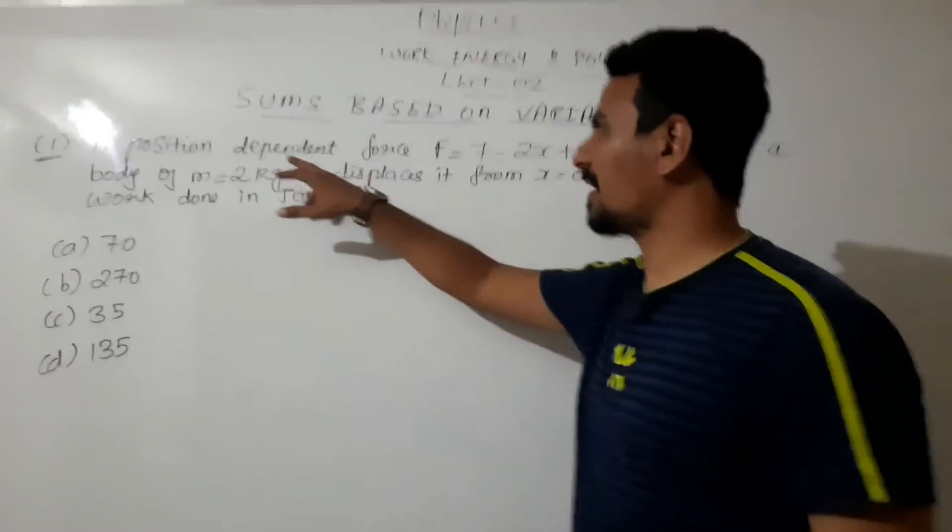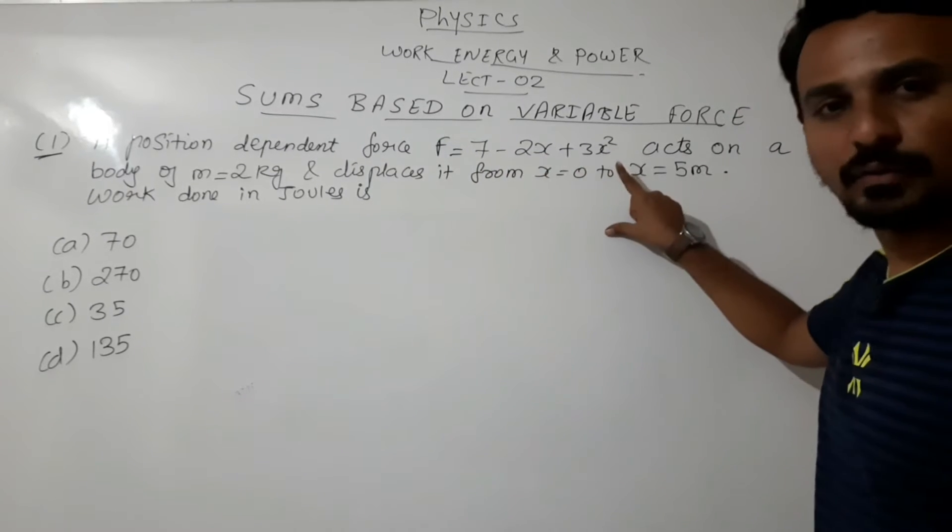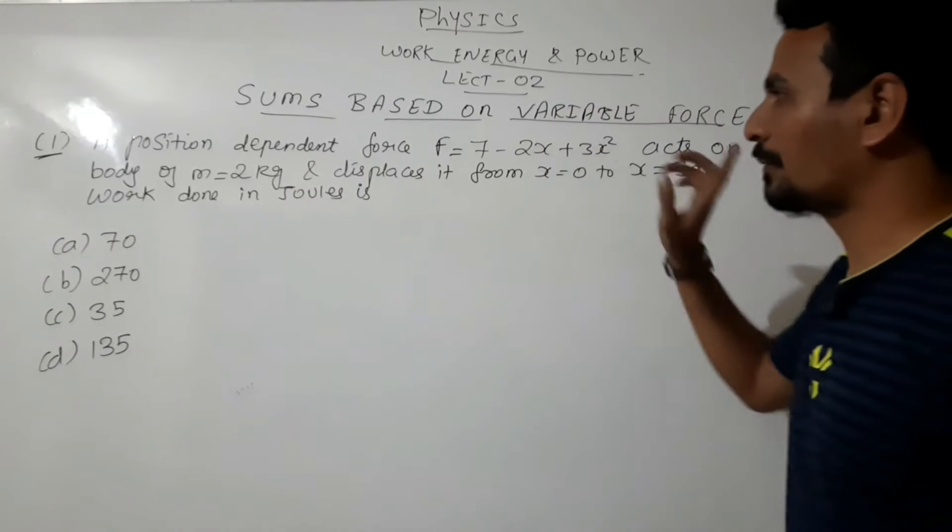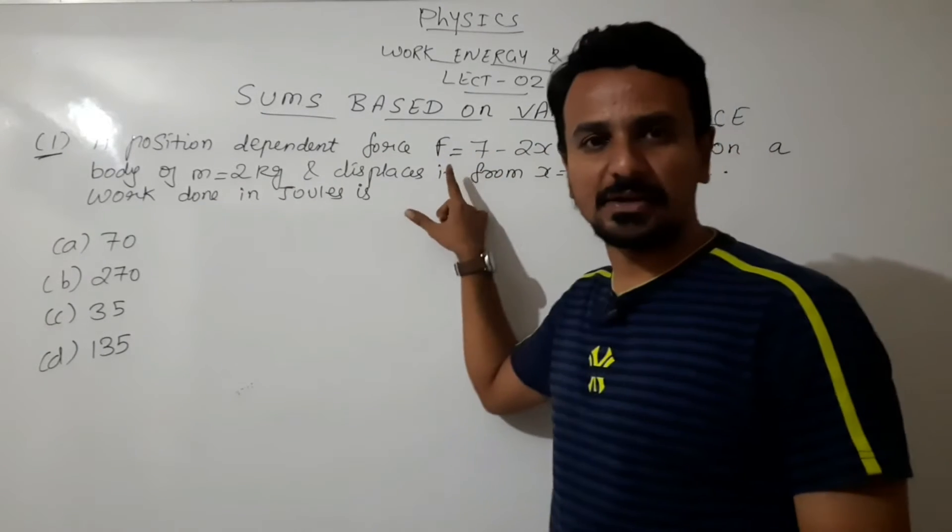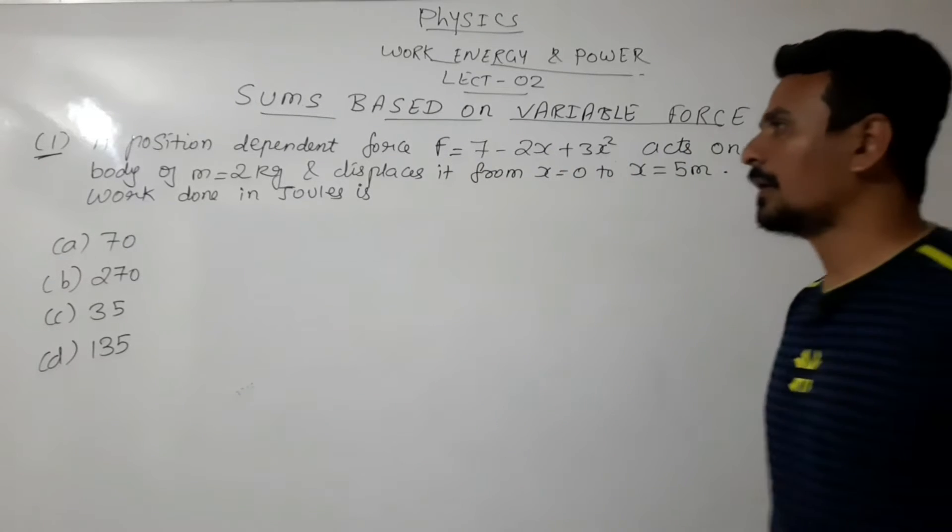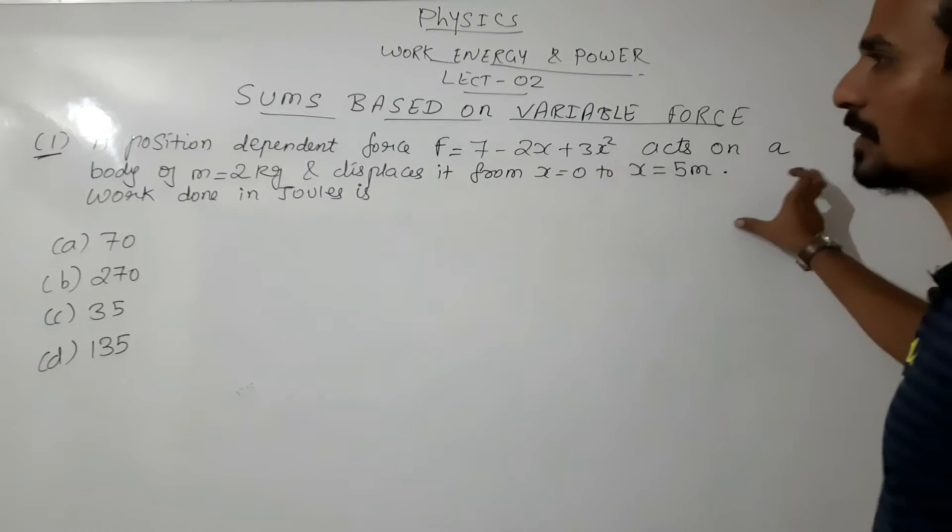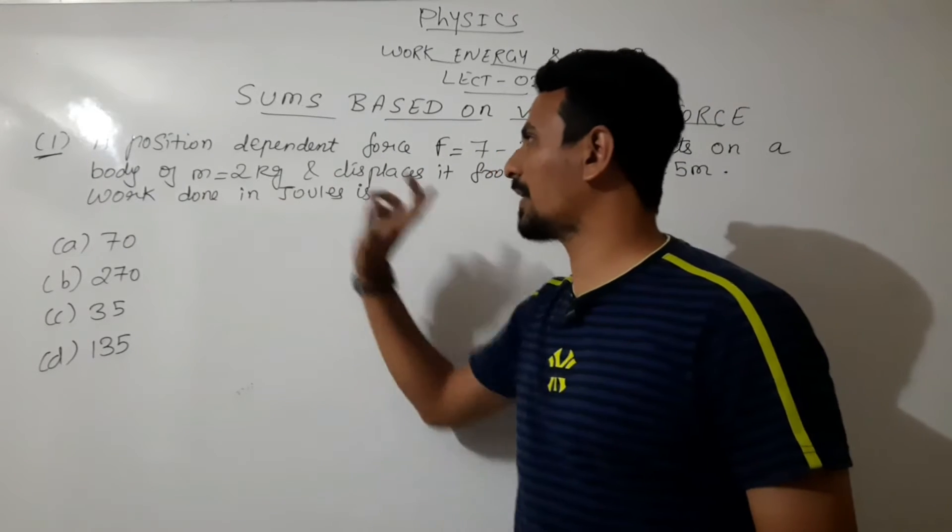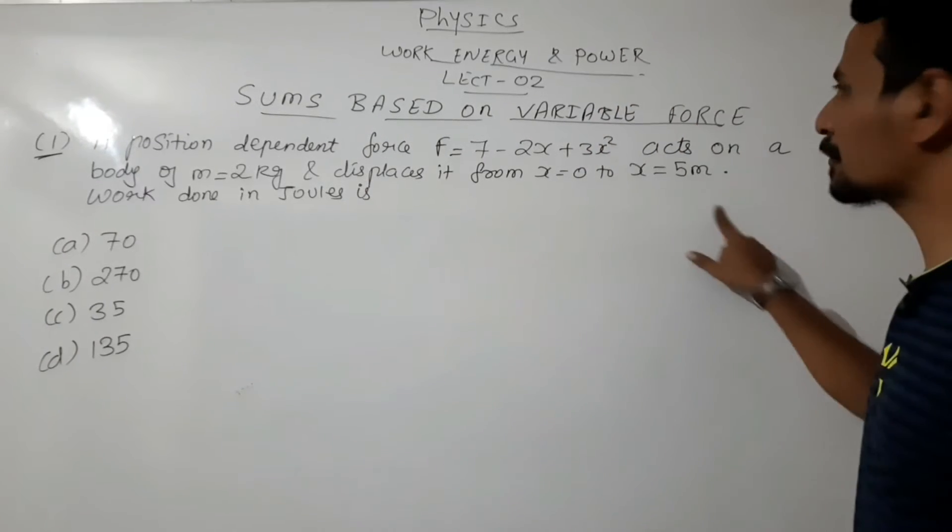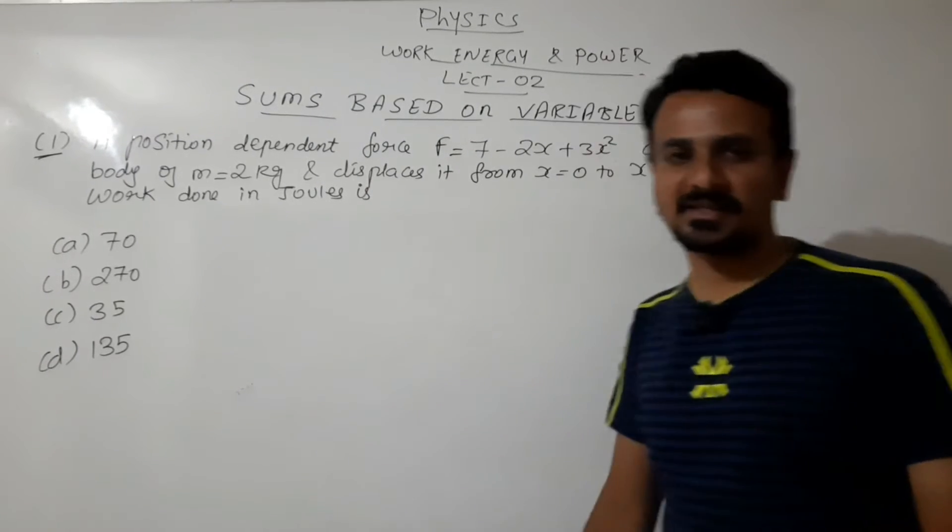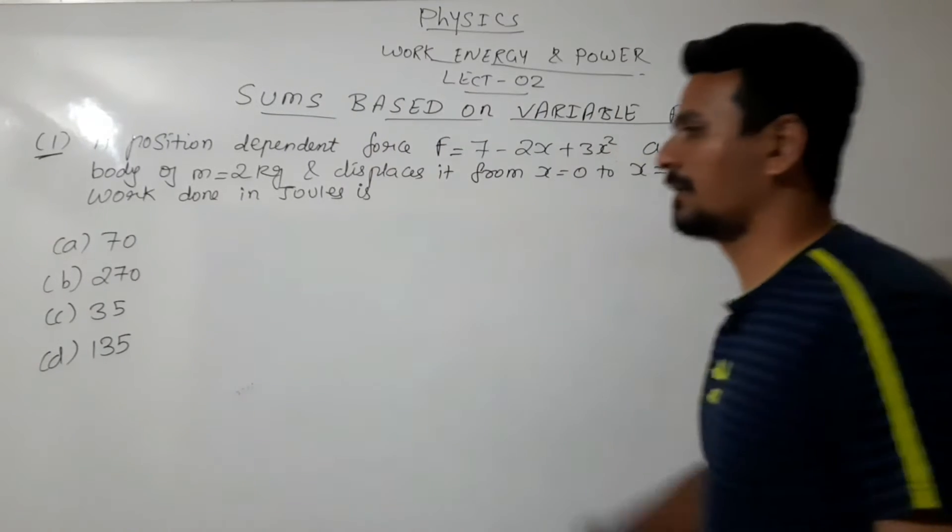A position dependent force F = 7 - 2x + 3x² acts on a body of 2 kilogram mass. By substituting the value of x, F will change, so the force is variable. Because of this force the body displaces from 0 to 5 meter. So what is the work done?